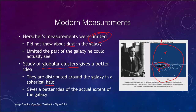Studying these globular clusters, Harlow Shapley was able to find that the center of our galaxy is well outside even the little section Herschel was able to observe back in the 1700s. Shapley found that we are not near the center of our galaxy as Herschel's measurements had suggested — we are actually well away from it.